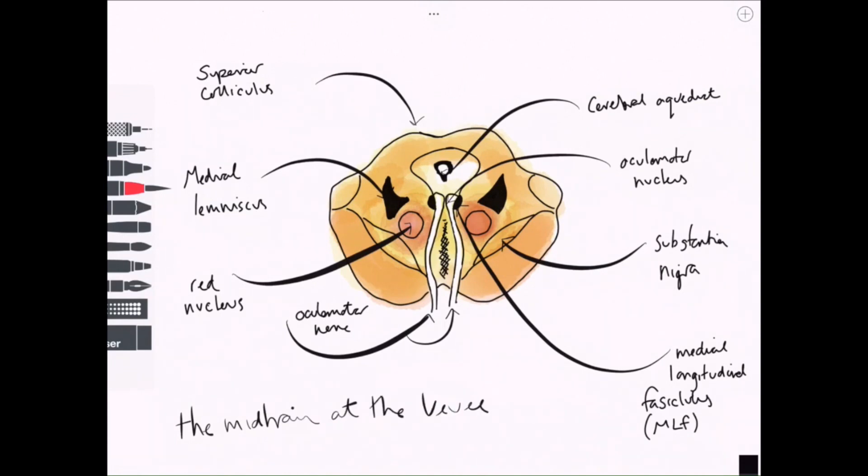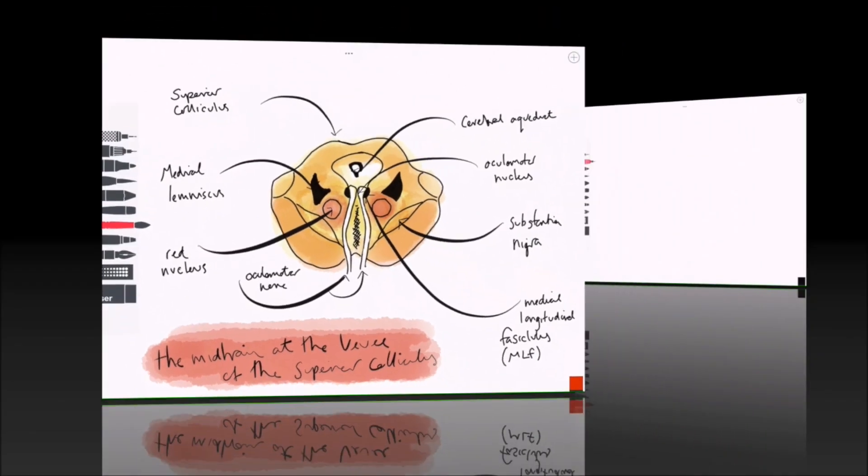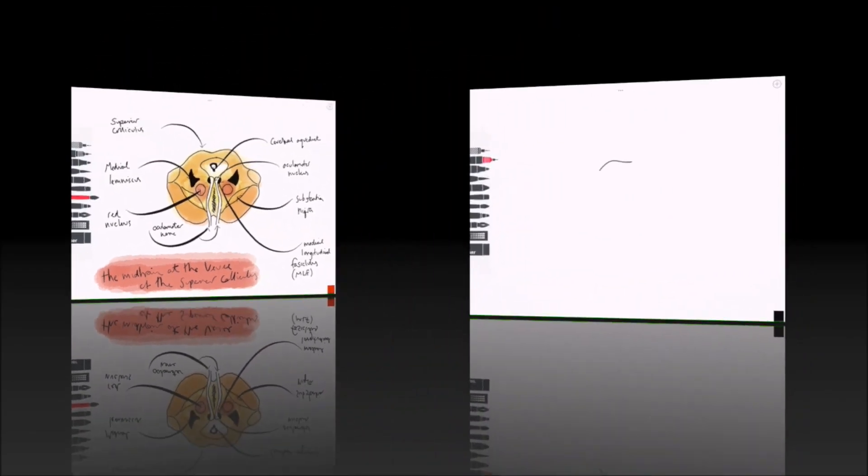And what we're going to do now is we're going to take a look at the level slightly below there, which is at the level of the inferior colliculus. And what you'll see, first of all, is that we will find some of the same structures, but there are a couple of exceptions.